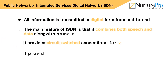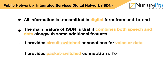ISDN is an international communication standard for sending voice, video, and data over digital telephone lines or normal telephone lines. It provides circuit-switched connections for voice or data, and similarly provides packet-switched connections for data only. ISDN supports data transfer at rates of 64 kbps, and in some countries it supports data transfer rates of 128 kbps bandwidth in both upstream and downstream directions.